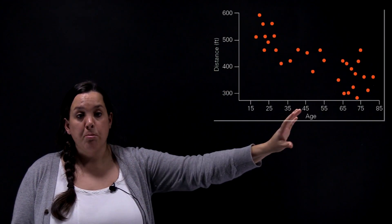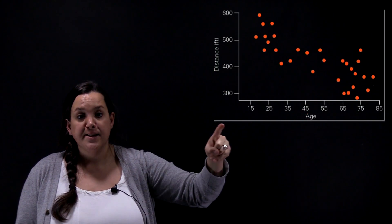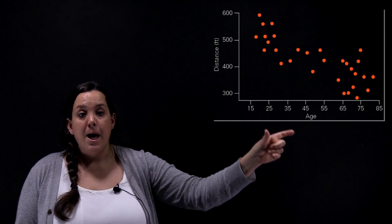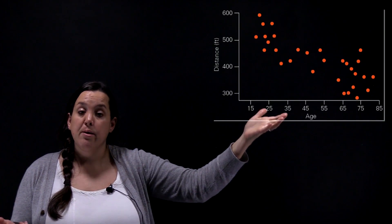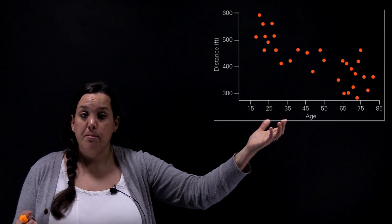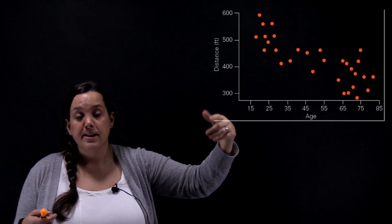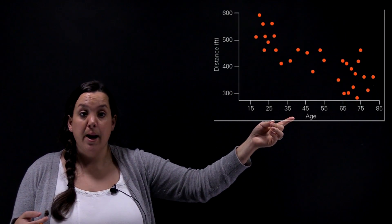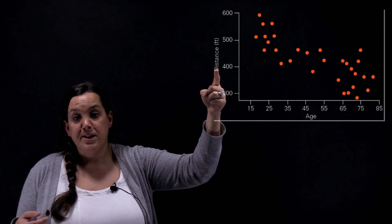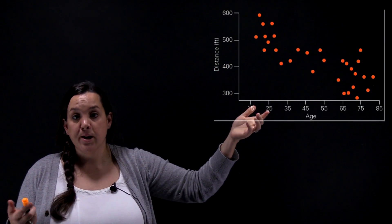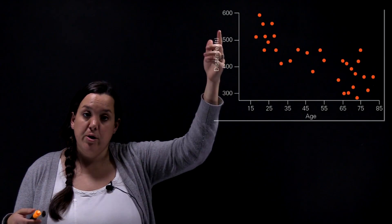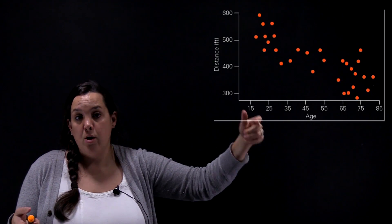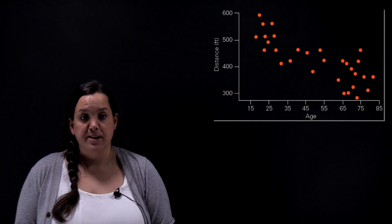This is called a scatterplot. The x-axis is on the horizontal and the y-axis is on the vertical. Here, age is on the x-axis — on a scatterplot, the variable on the x-axis is your explanatory variable. Distance is on the y-axis, making it the response variable. In this scenario, age partially explains your ability to see a certain distance.